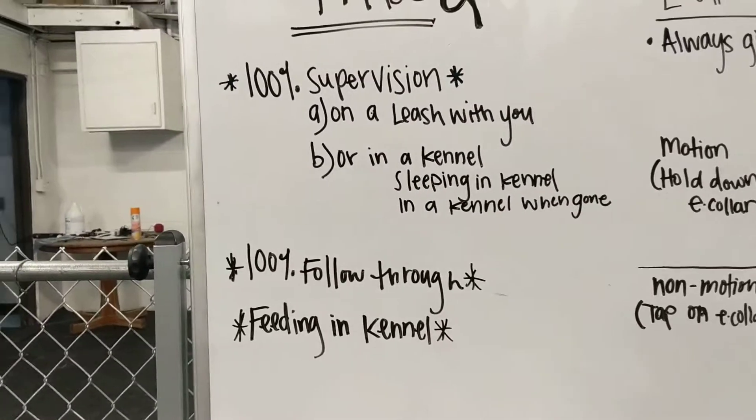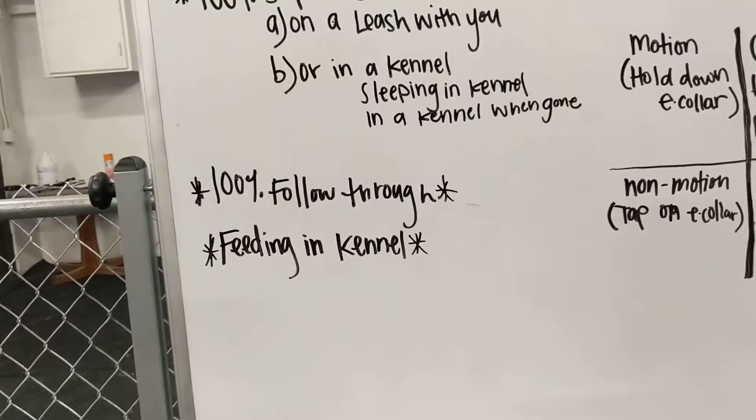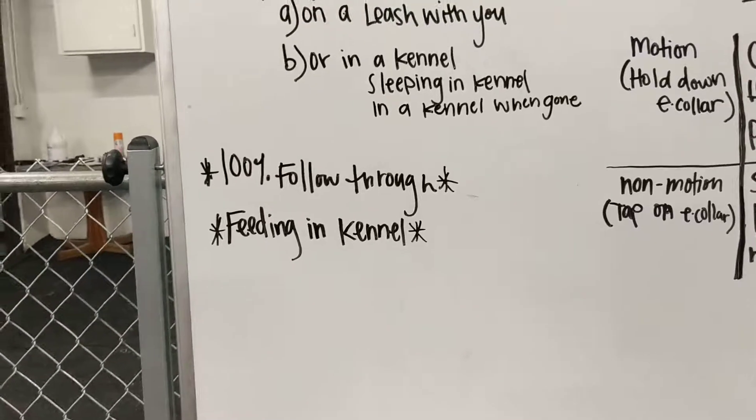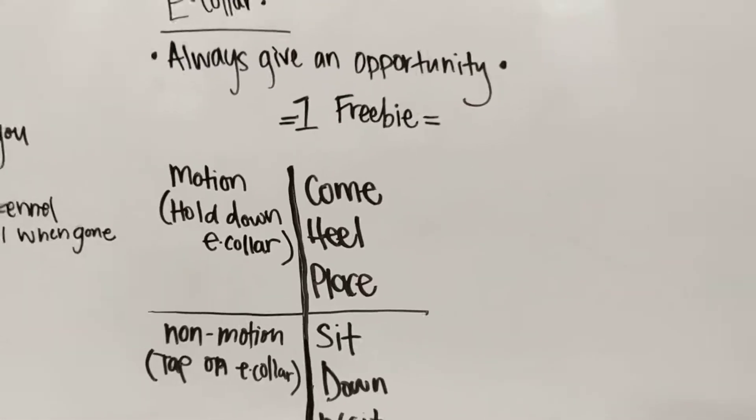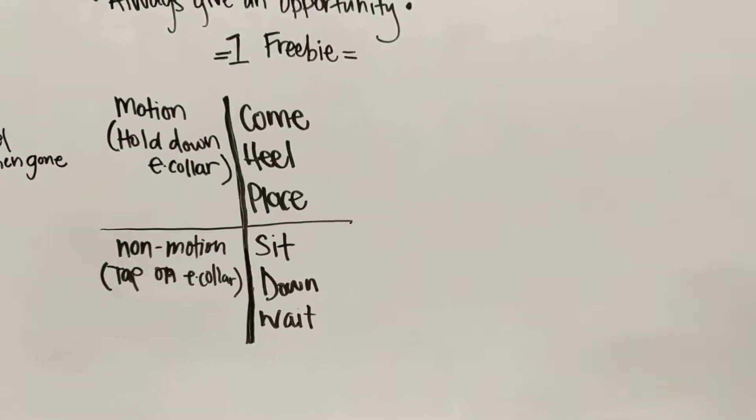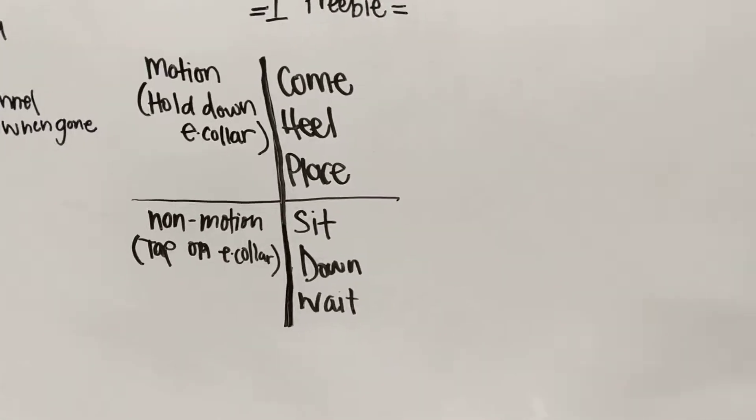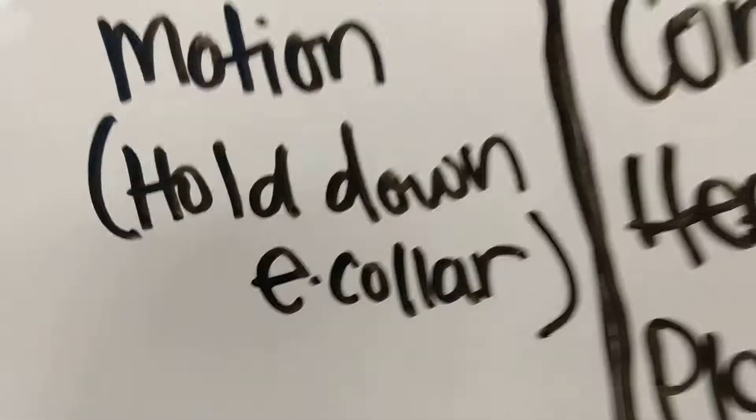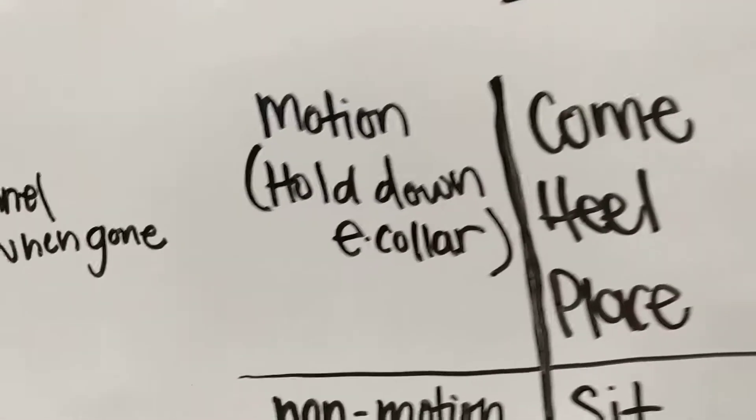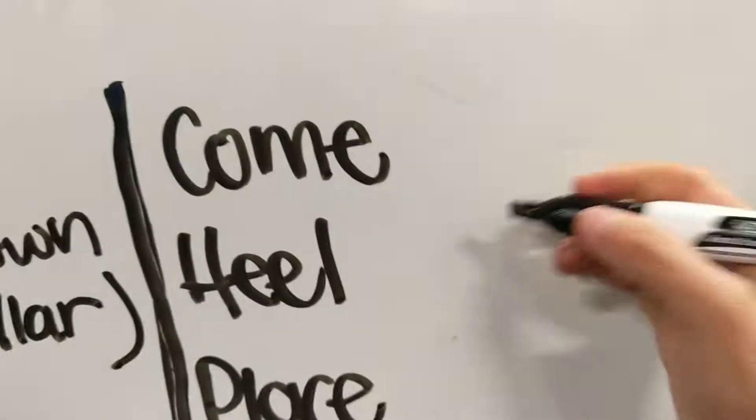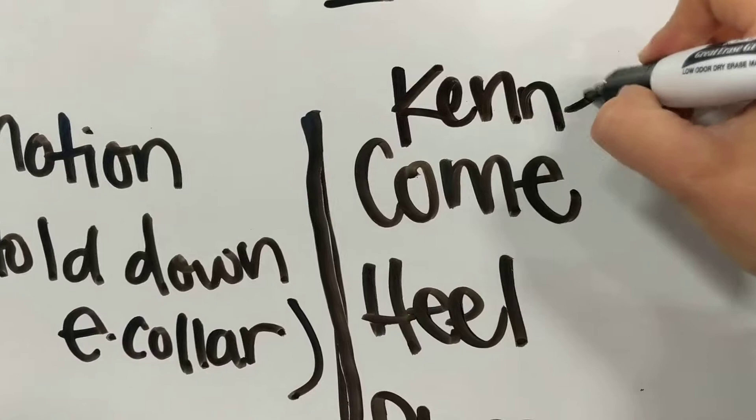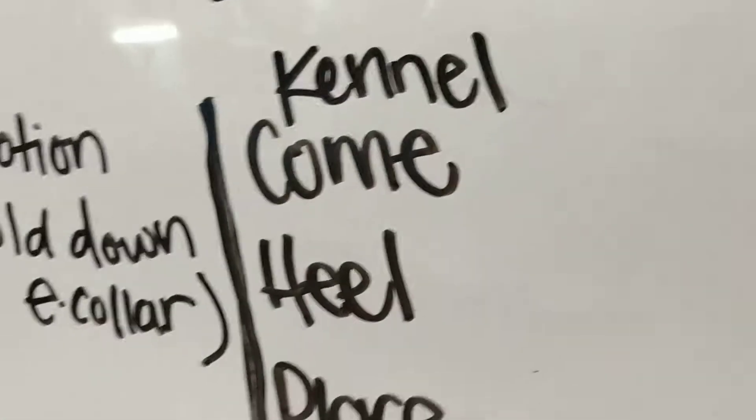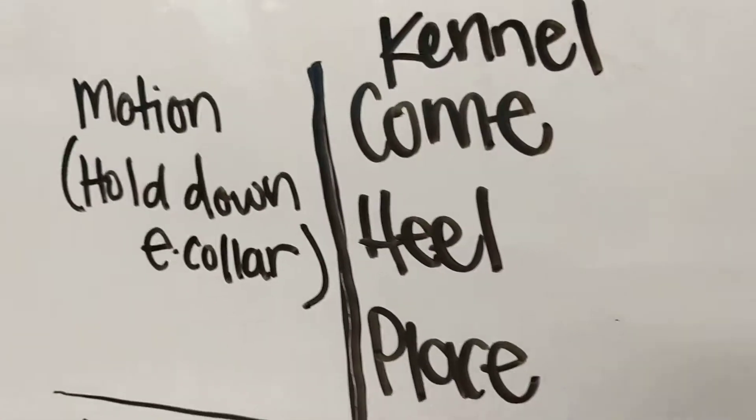So that's really important too. So those are my three basic rules: 100% supervision, 100% follow through, and feeding in the kennel. Okay. So now I'm going to talk about the e-collar and then in my next video, we'll go into all of his commands. So this is all the stuff that he knows. I'm going to add one more here on the board. Sorry, I'll have to excuse me as I do this. This is also another one he knows - he knows the word kennel. Okay. So this is Coda's vocabulary.